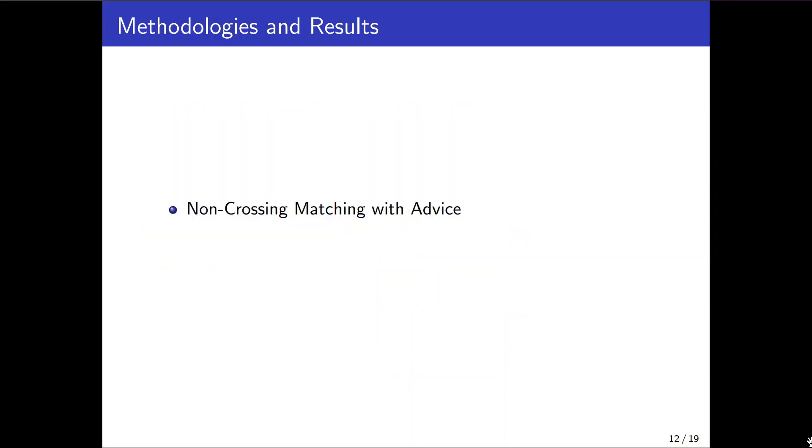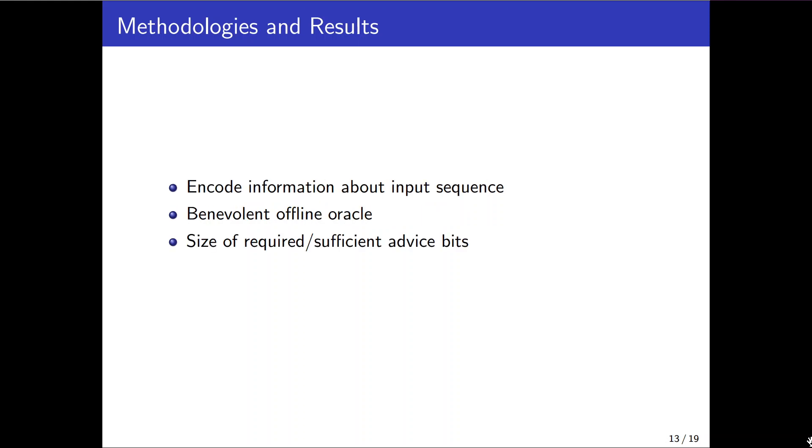In following I'll explain our results under the advice model and provide a big picture of proofs. In the advice model actually some bits of information about the input is provided by an offline oracle who knows the entire input. In this model we always look for the number of sufficient and required advice bits to achieve an optimal solution. In this case the optimal solution is to match all points.